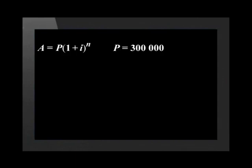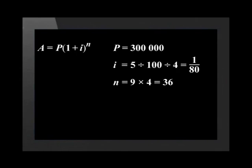With P equal to 300,000, i equal to 5 divided by 100 divided by 4, which equals 1 divided by 80, and n equal to 9 multiplied by 4, which equals 36.